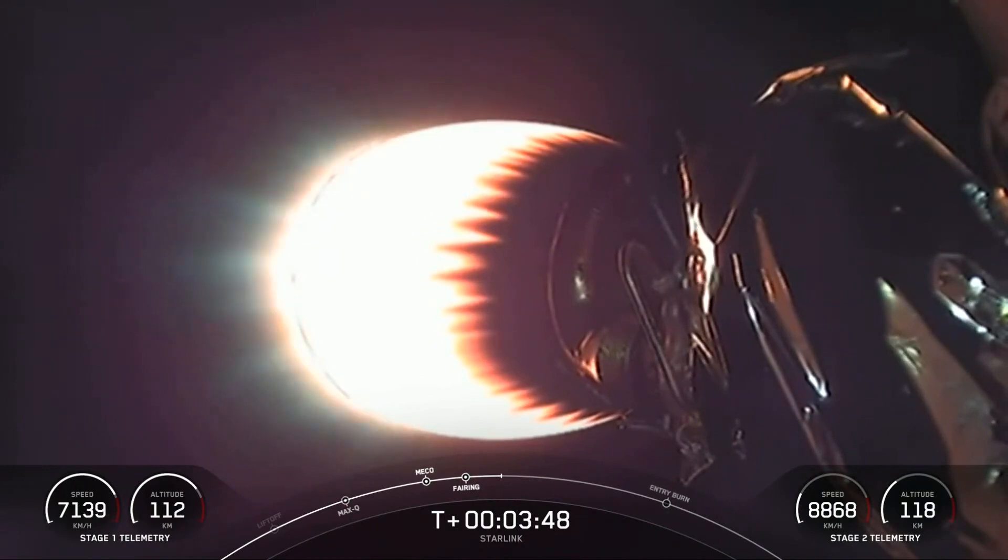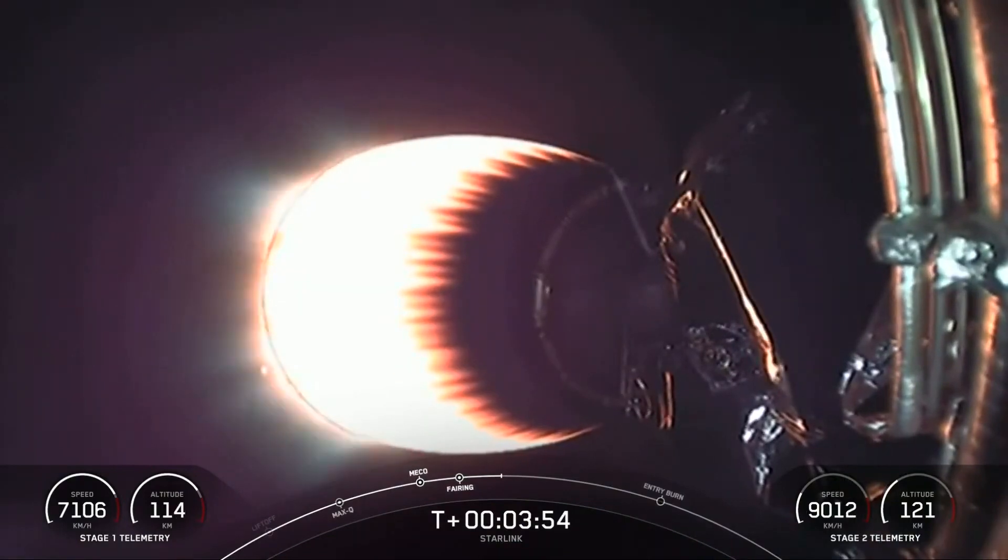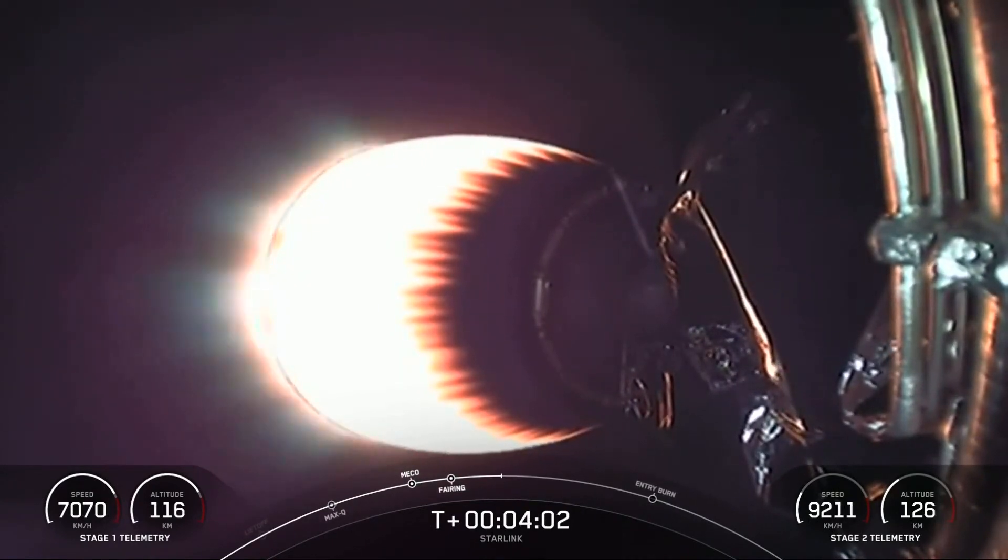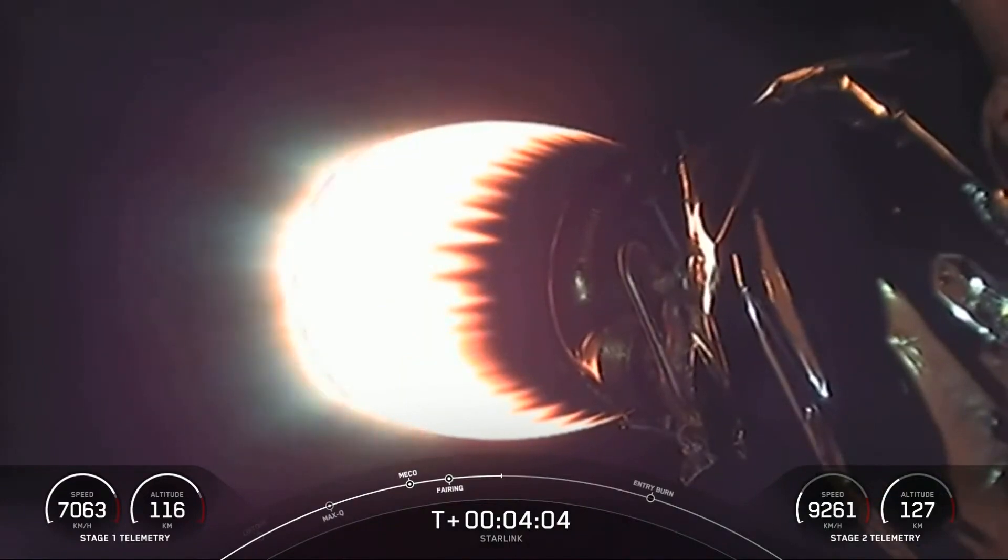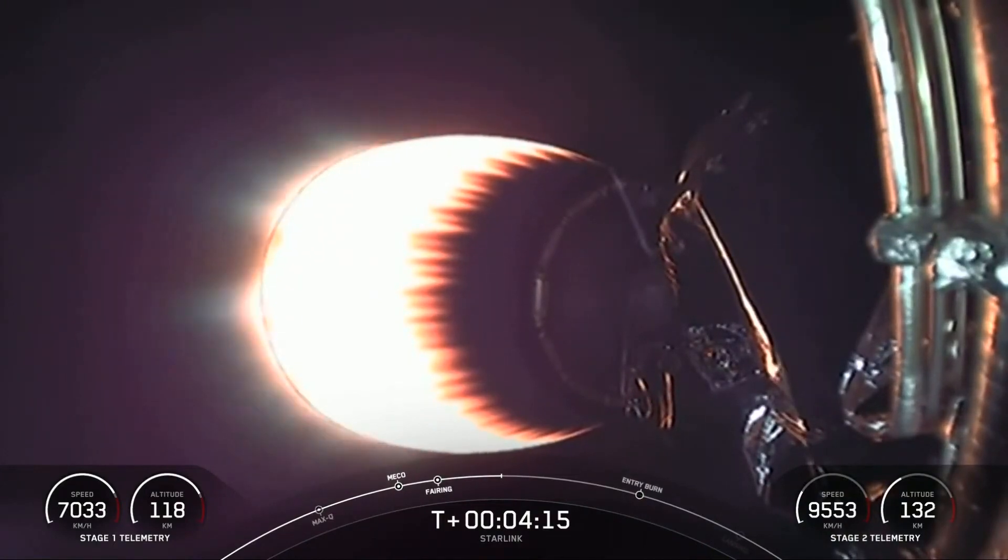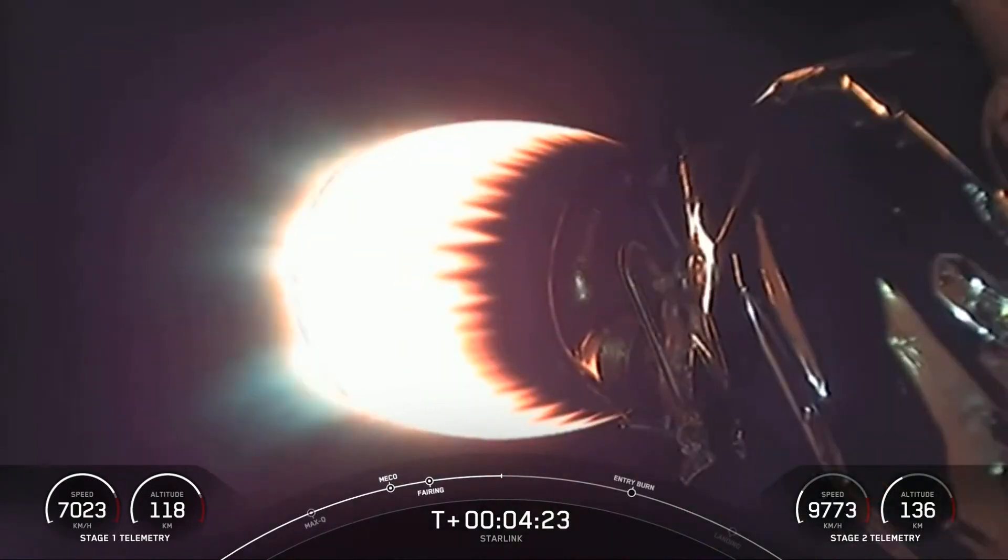After that beautiful launch that we just couldn't barely see, Stage 2 heads towards its targeted drop-off orbit. Stage 1 is going to execute two burns in order to make its way back down to Earth. The first is the entry burn, where three of the M1D engines will reignite, and this will help slow the stage down as it re-enters the upper part of the Earth's atmosphere. The second burn is the landing burn. This is a single engine burn that will bring the vehicle speed down rapidly in order to land on our drone ship, Of Course I Still Love You.